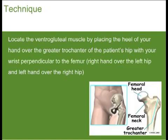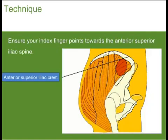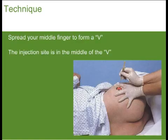To locate the ventrogluteal muscle, place the heel of your hand over the greater trochanter of the patient's hip, with your wrist perpendicular to the femur. Ensure that your index finger points towards the anterior superior iliac spine. Spread your middle finger to form a V. The injection site will be in the middle of the V, as shown here.